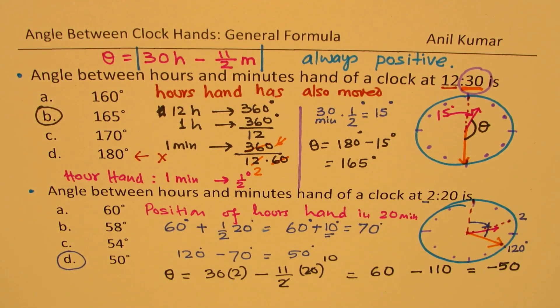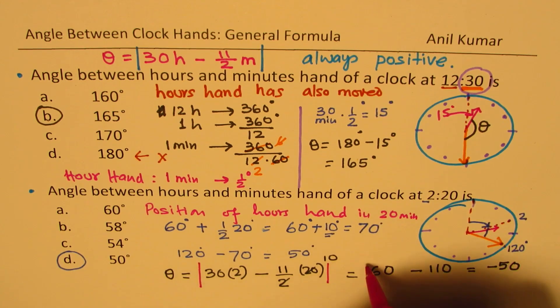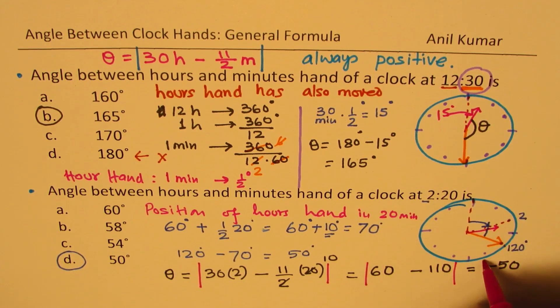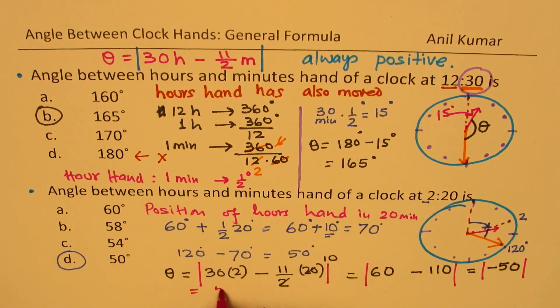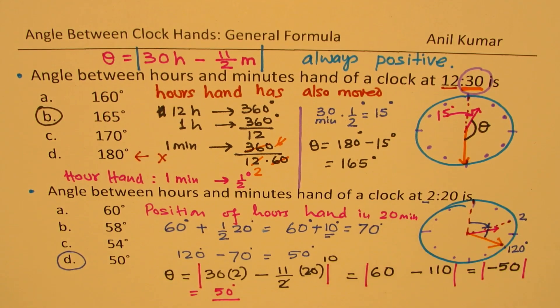So now, remember that this value is always positive. And therefore, you have to take the absolute value. So the absolute value is 50 degrees. You can use the formula. Remember that the angle between them is positive. We got negative answer mainly because the minute hand had crossed the hour's hand.